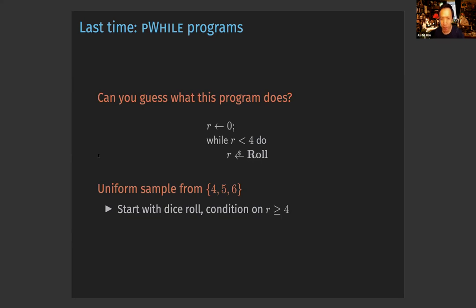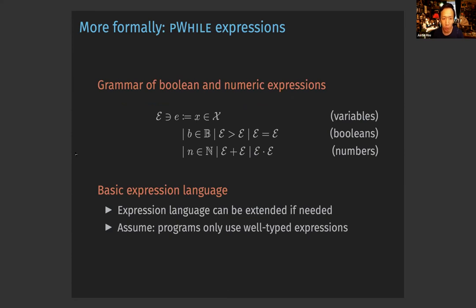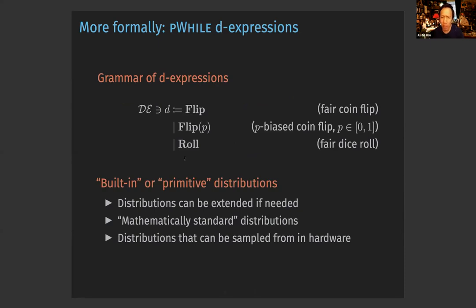We were in the middle of introducing the syntax of P-While. First, we have expressions — program variables, Boolean expressions, or numeric expressions. Everything can be extended if you like additional operations. We also talked about distribution expressions, which are the built-in distributions of the language: a fair coin flip called flip; a P-biased coin flip where the probability of seeing true is P and false is one minus P; and a roll distribution where you get a number from one to six with equal probability.